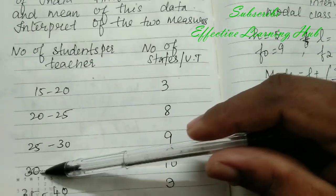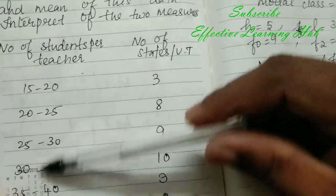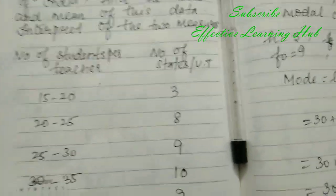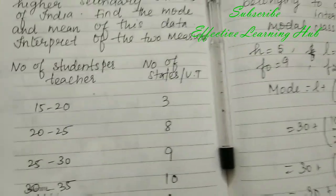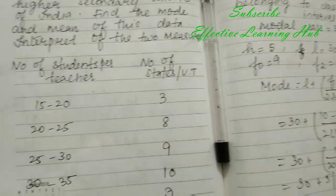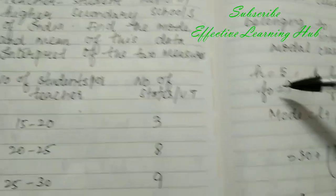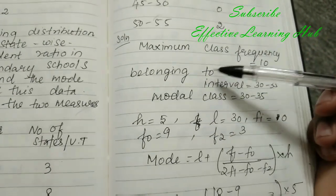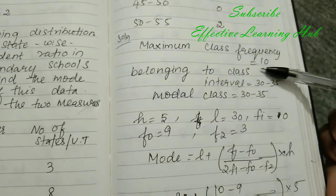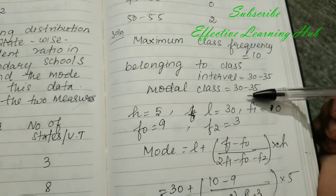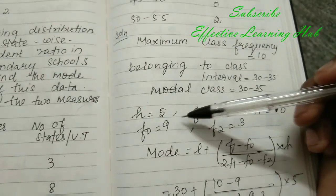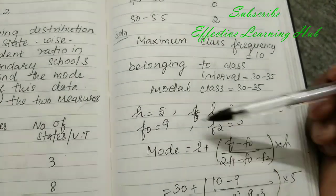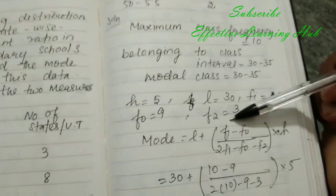f2 equal to 3, L equal to 30, lower limit equal to 30. Class interval 15 to 20, 20 to 25, 25 to 30, total distance 5, so height equal to 5. Now substitute the value, maximum class frequency 10, so L equal to 30, F1 equal to 10, F0 equal to 9, F2 equal to 3.